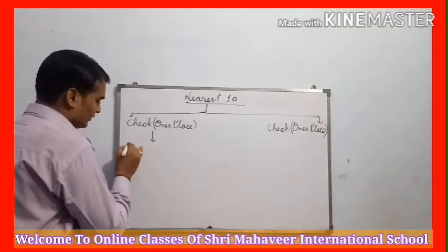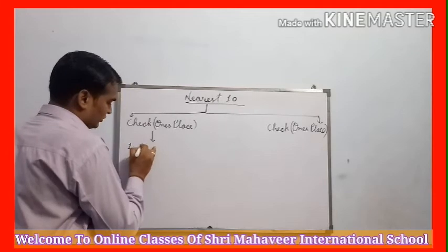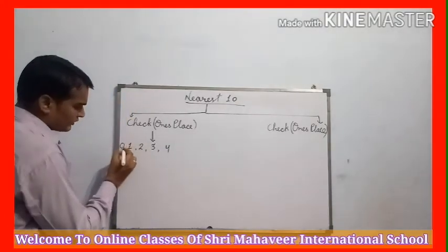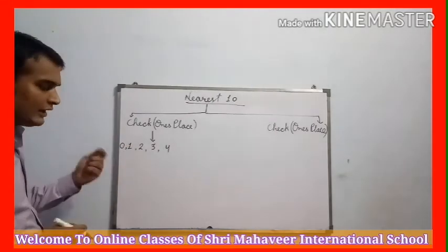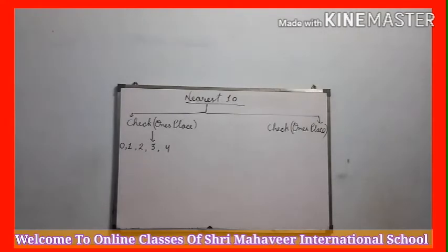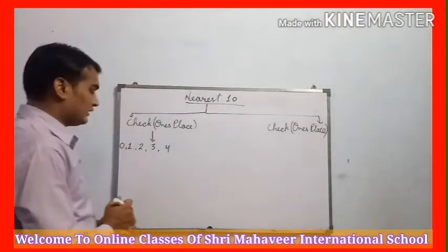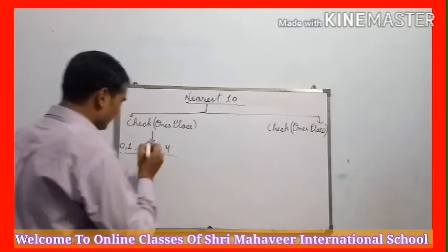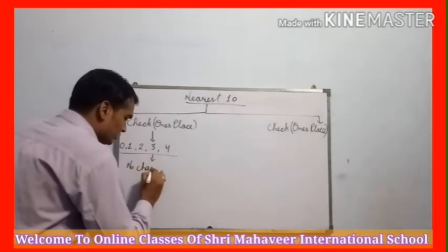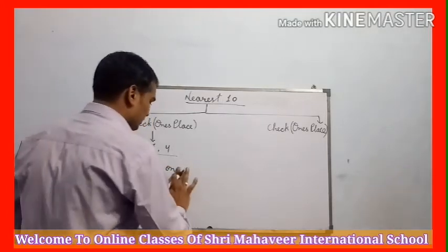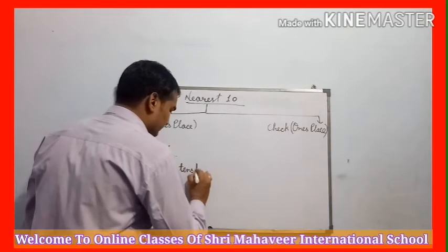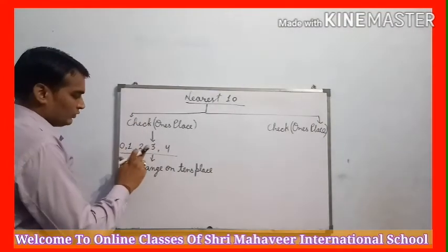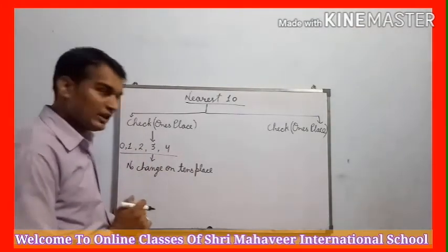अगर हमें ones place पर 0, 1, 2, 3, 4 - इन में से कोई digit मिलती है, तो no change on 10th place. मतलब 10th place वाले digit में कोई change नहीं करेंगे. और अगर हमें ones place पर 5, 6, 7, 8, या फिर 9 मिलता है, तो हम one add on 10th place digit करेंगे - 10th place की जो digit है उसमें 1 add कर देंगे. यह तो है rule.